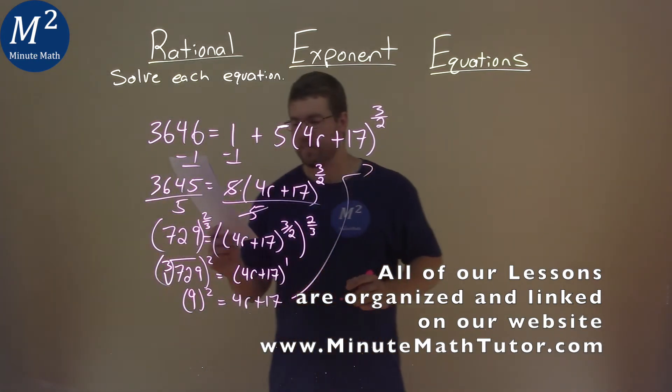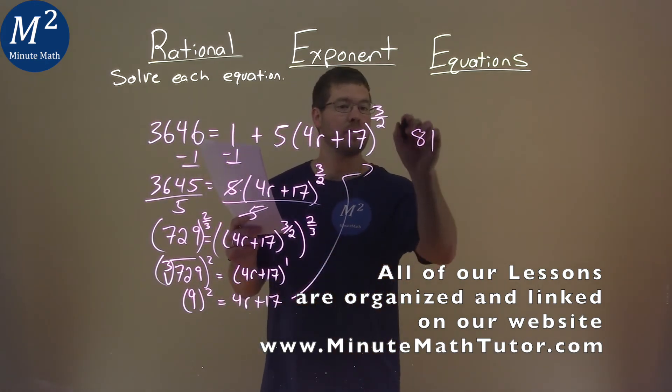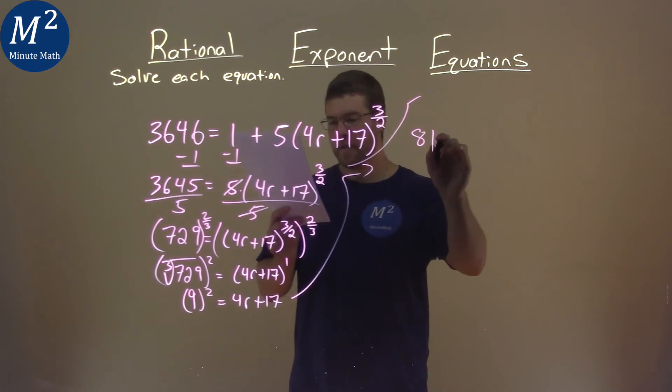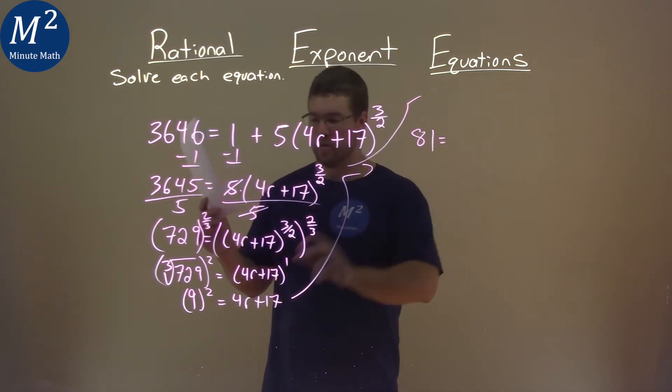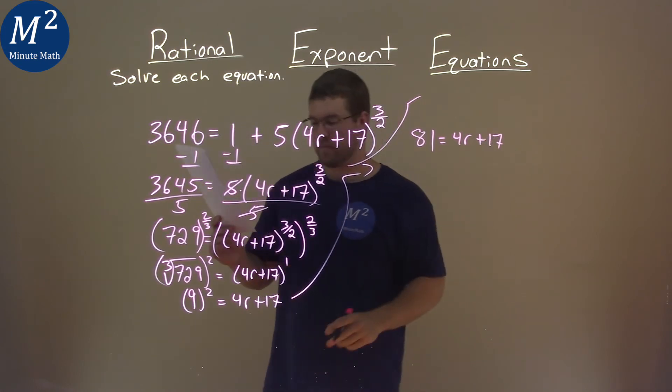To complete it up here, 9 squared is 81. Separate that out. 81 here. And we bring over the right hand side, we have 4r plus 17 right there.